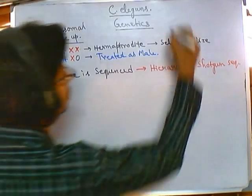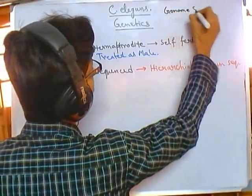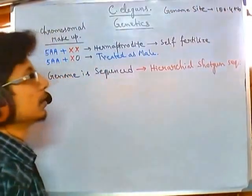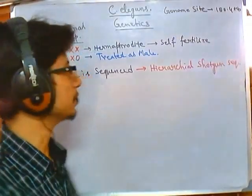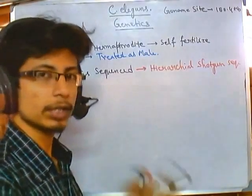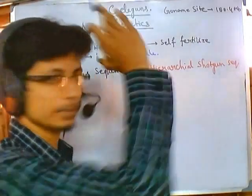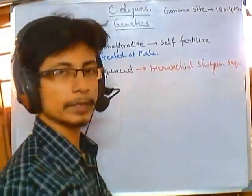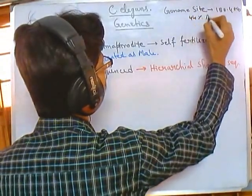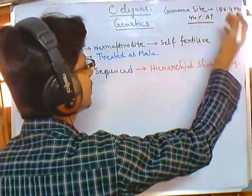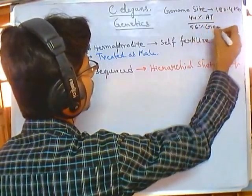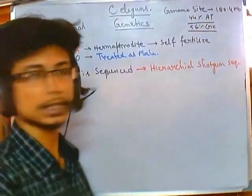Once we get the sequence, it tells us the total genome size. The genome size of C. elegans is 100.4 MB. It's not that big — for a eukaryotic system it is relatively small, but for a bacterial system it would be way above average. The genome also has 44% AT-rich sequence, meaning the remaining 56% is GC. So the GC content is higher than the AT content.